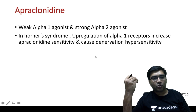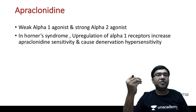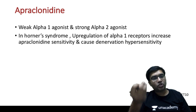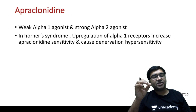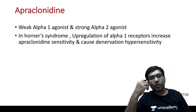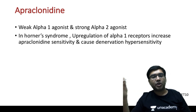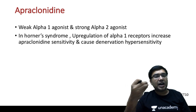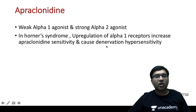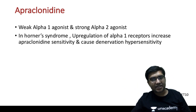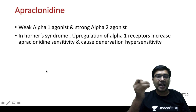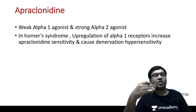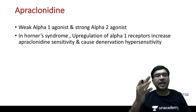A similar test uses apraclonidine, which is a weak alpha-1 agonist and strong alpha-2 agonist — the same category as brimonidine used in glaucoma. In Horner syndrome, because of sympathetic denervation, there is upregulation of alpha-1 receptors causing denervation hypersensitivity. The increased alpha-1 receptor sensitivity means that when apraclonidine drops are applied, these patients respond better than a normal patient — this is the apraclonidine test.